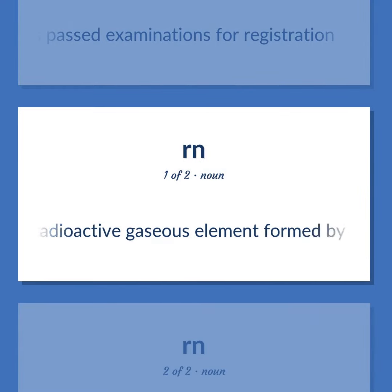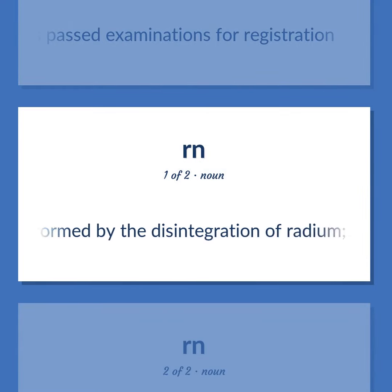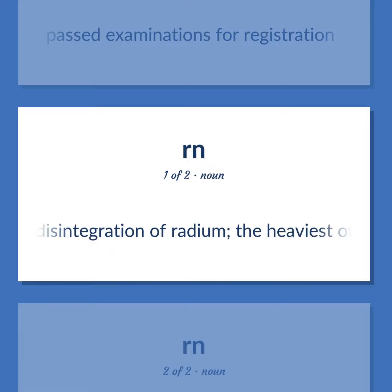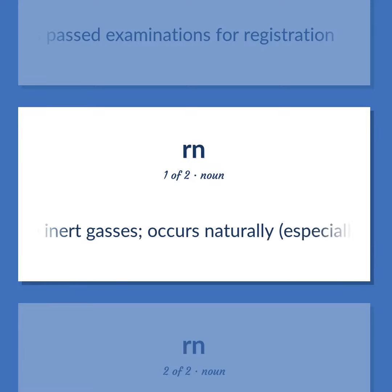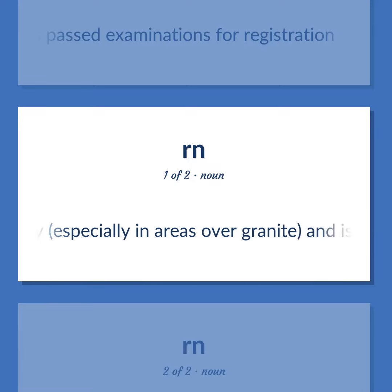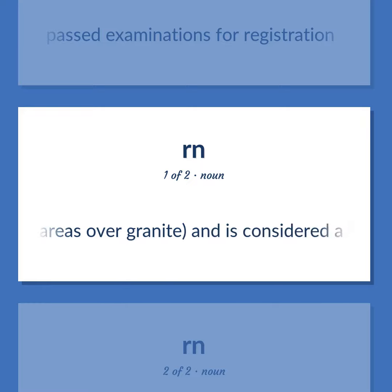A radioactive gaseous element formed by the disintegration of radium. The heaviest of the inert gases. Occurs naturally, especially in areas over granite, and is considered a hazard to health.